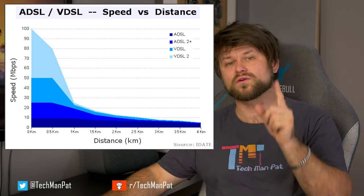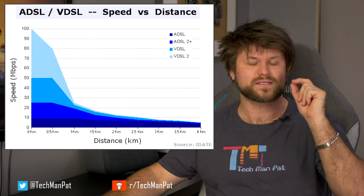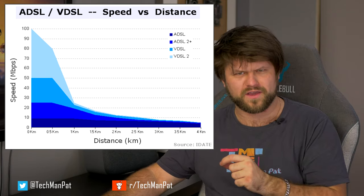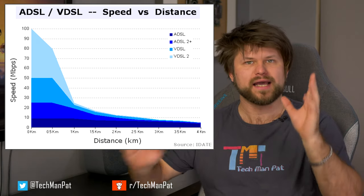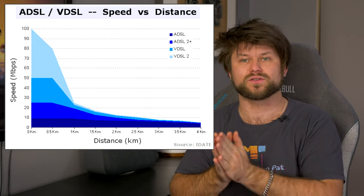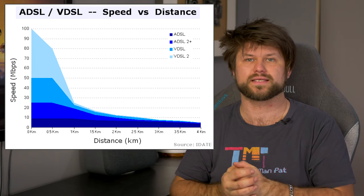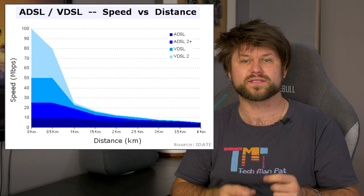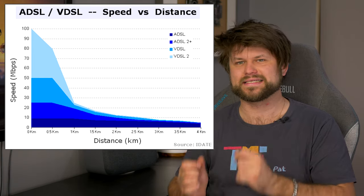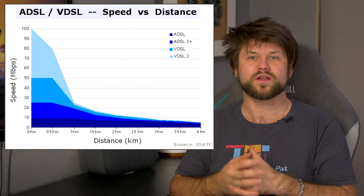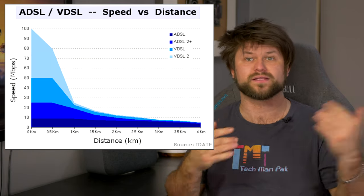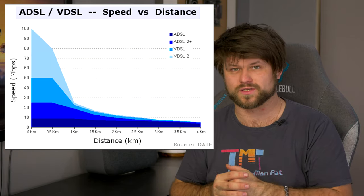If you are on NBN fiber to the node you will have VDSL2, not VDSL1. Second generation systems — VDSL2, approved in February 2006 — use frequencies of up to 30 megahertz to provide data rates exceeding 100 megabits per second simultaneously in both the upstream and downstream directions.